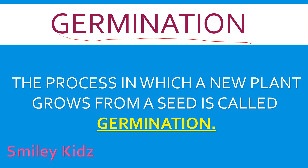Germination. The process in which a new plant grows from a seed is called germination. A seed needs a sufficient amount of water, light, warmth, and air to grow into a new plant.